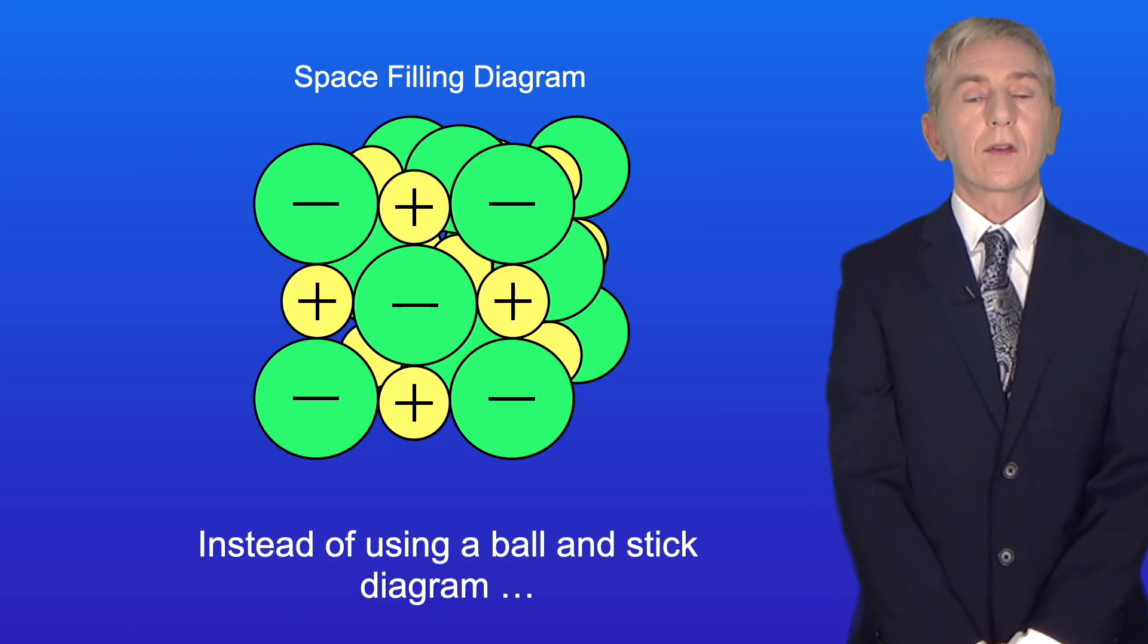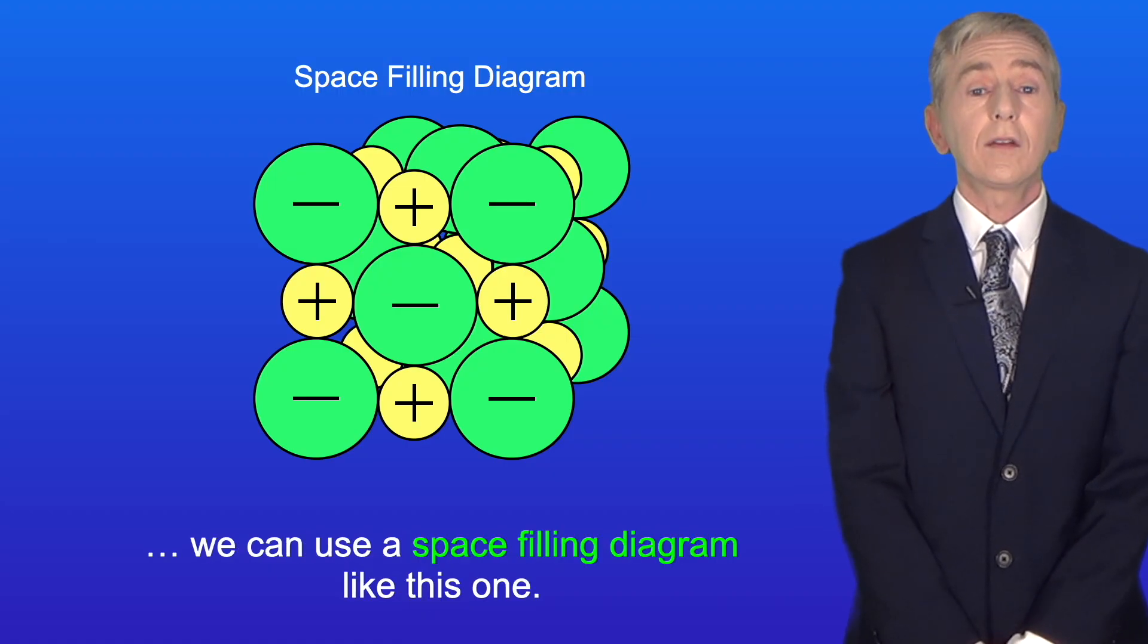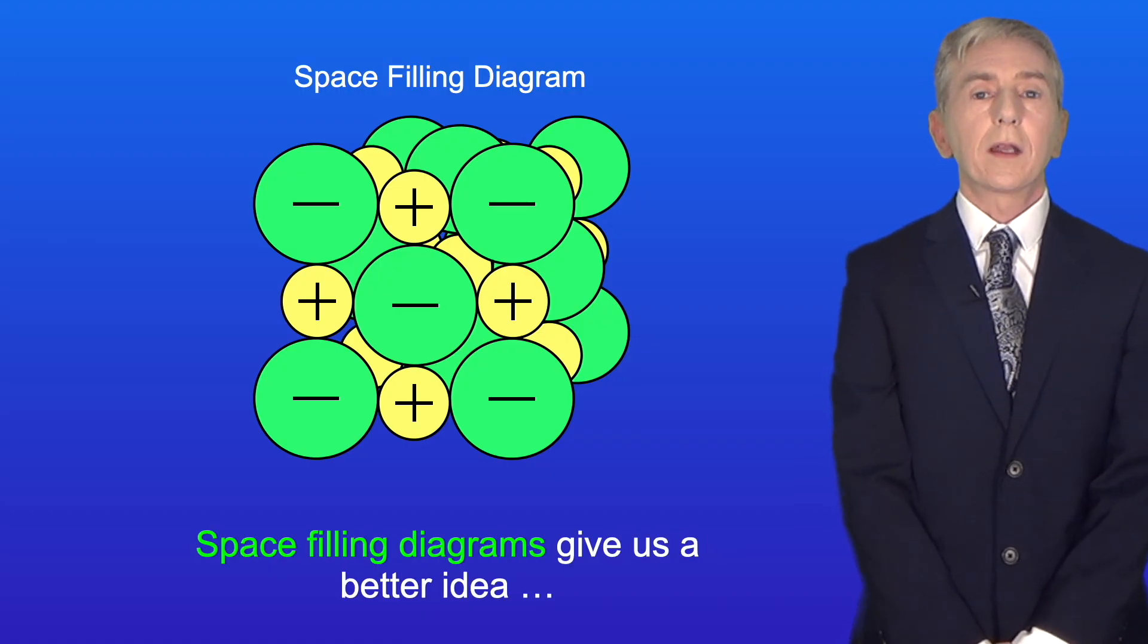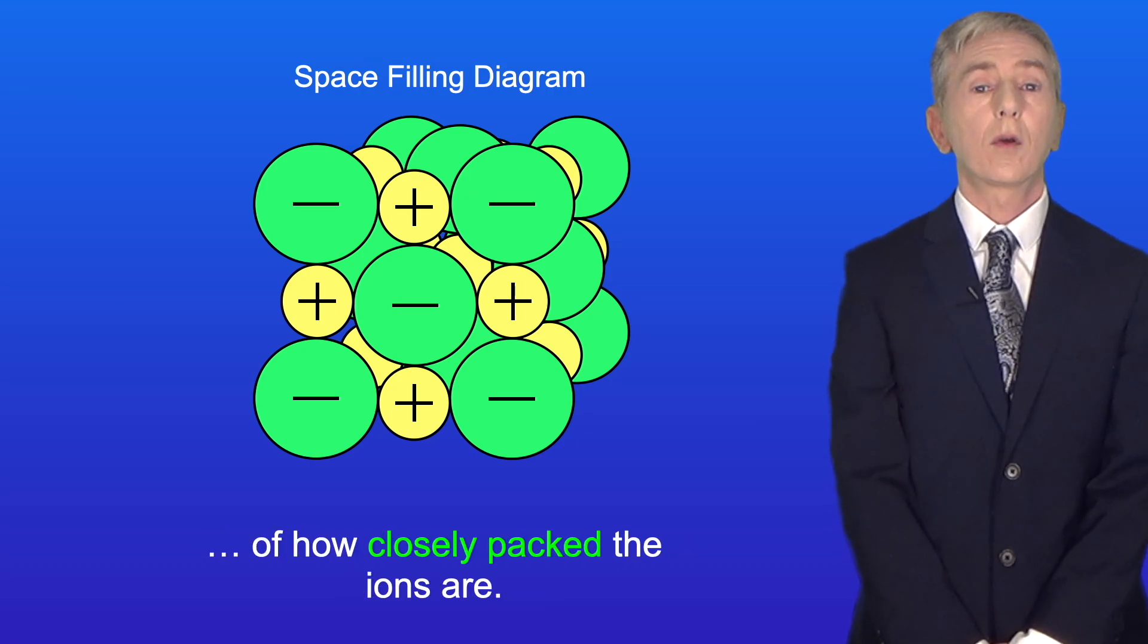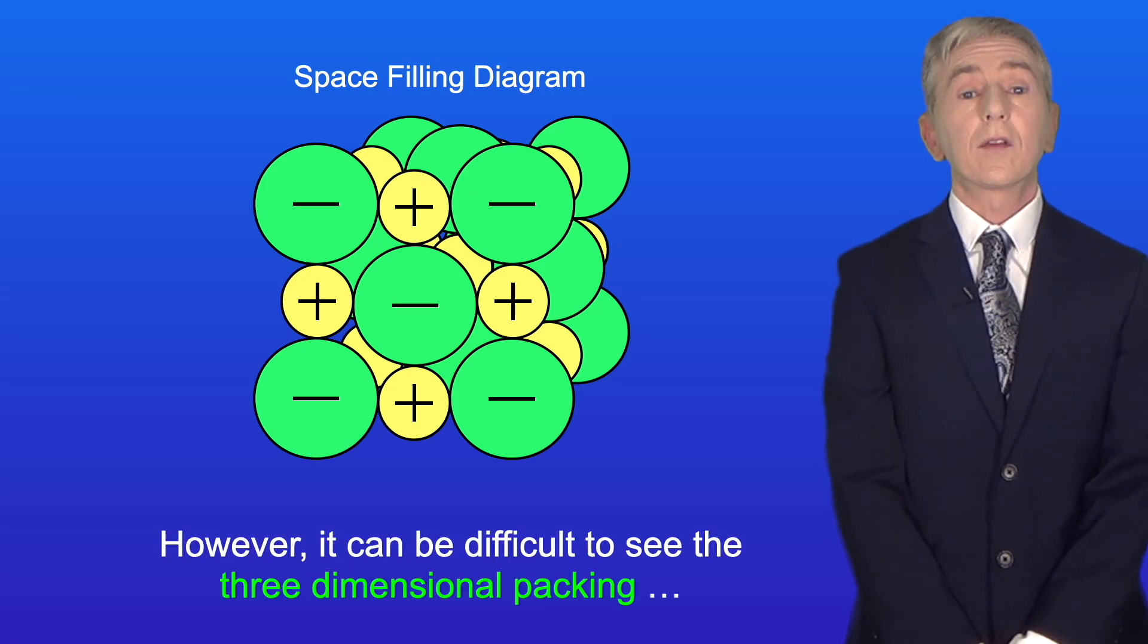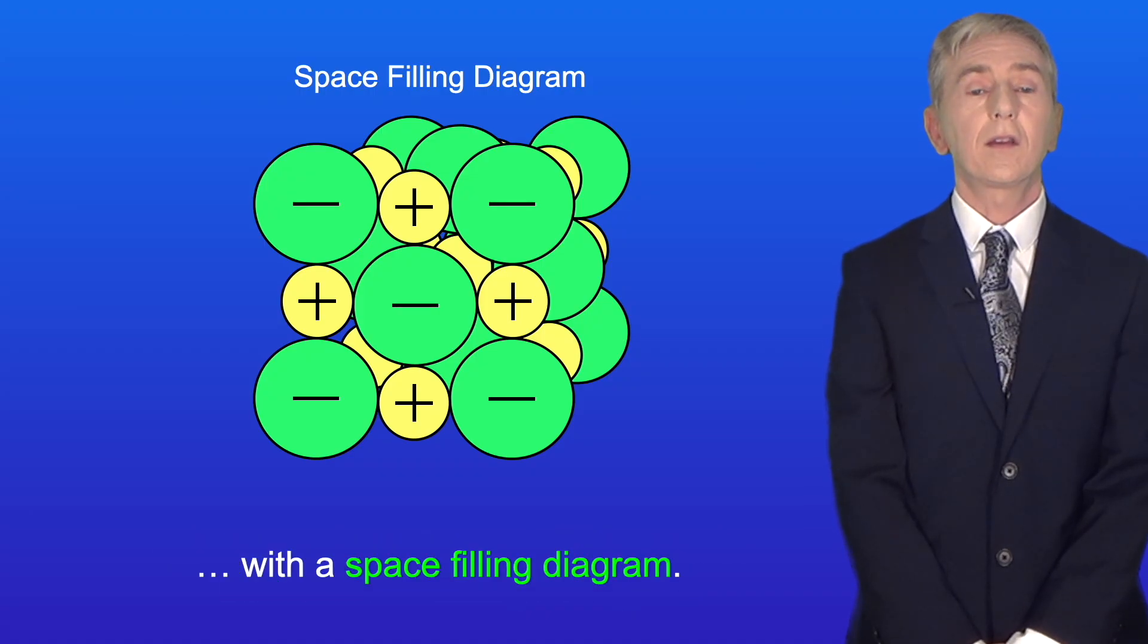Instead of using a ball and stick diagram we can use a space filling diagram like this one. Space filling diagrams give us a better idea of how closely packed the ions are. However, it can be difficult to see the three-dimensional packing with a space filling diagram.